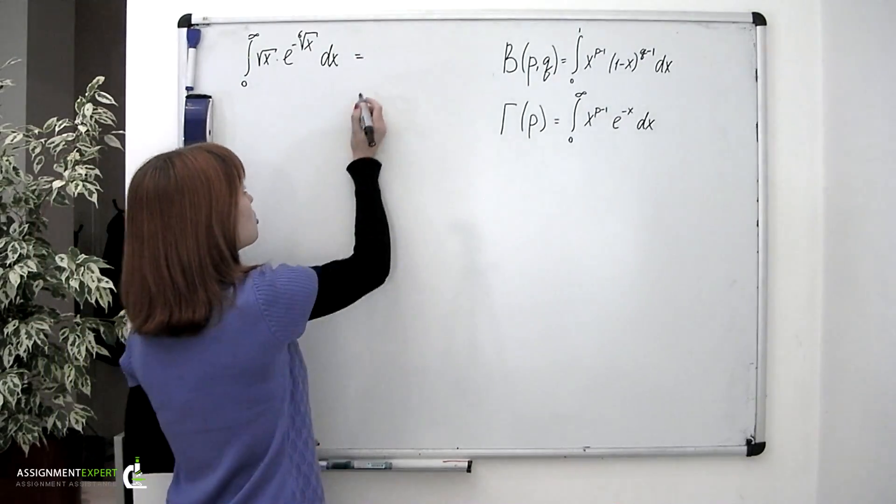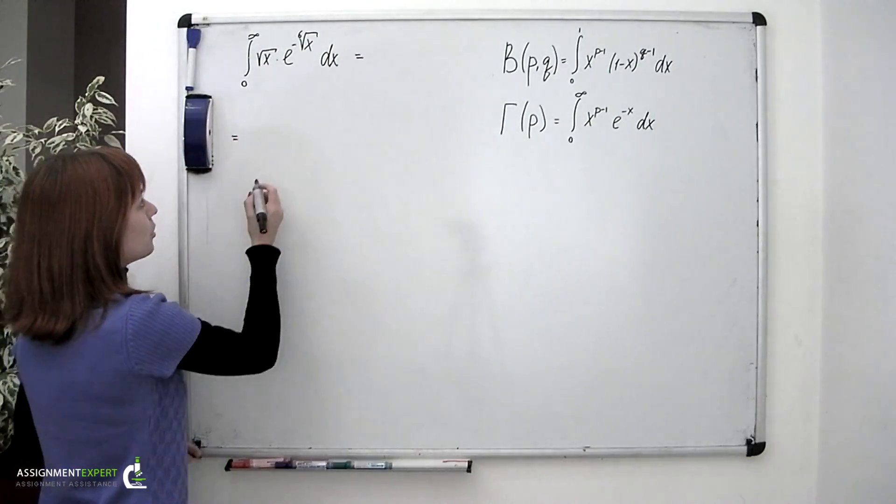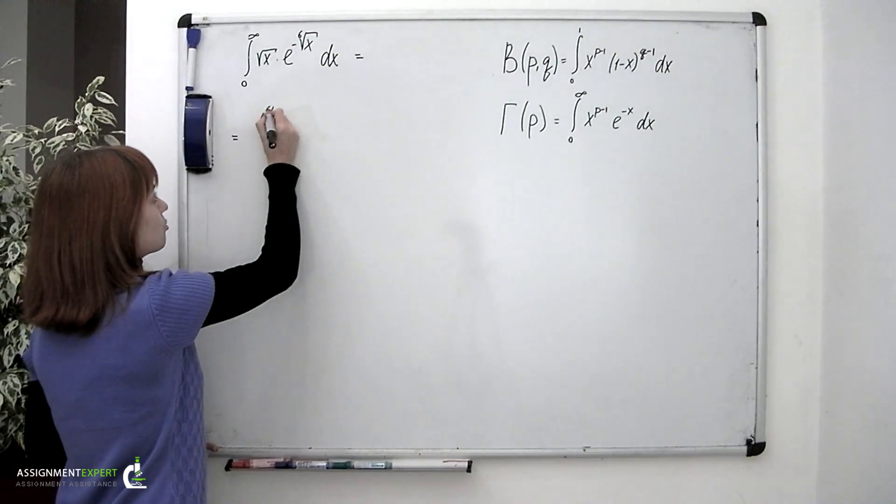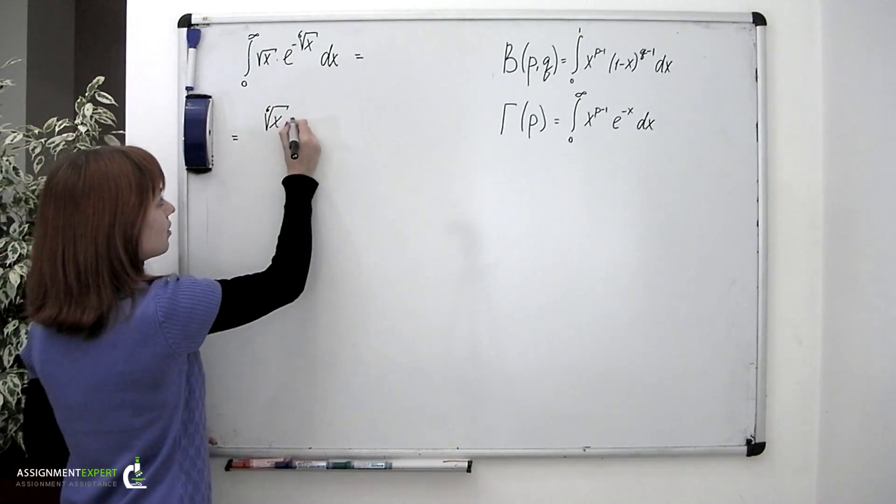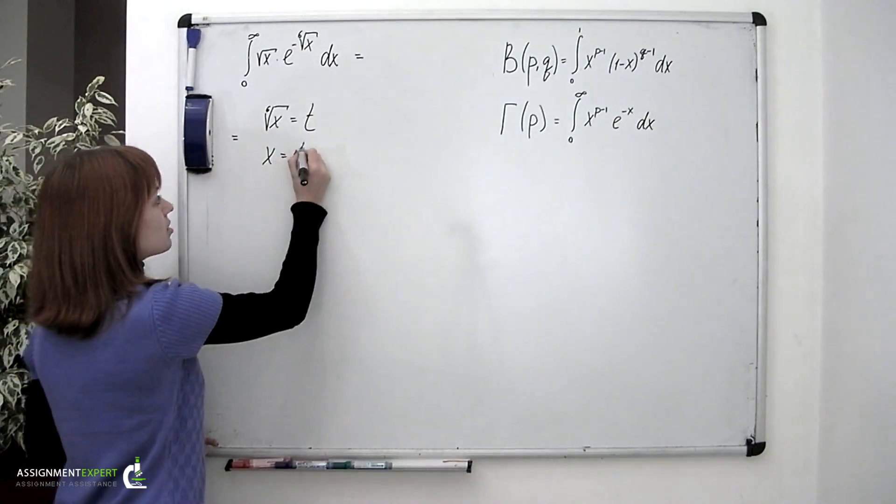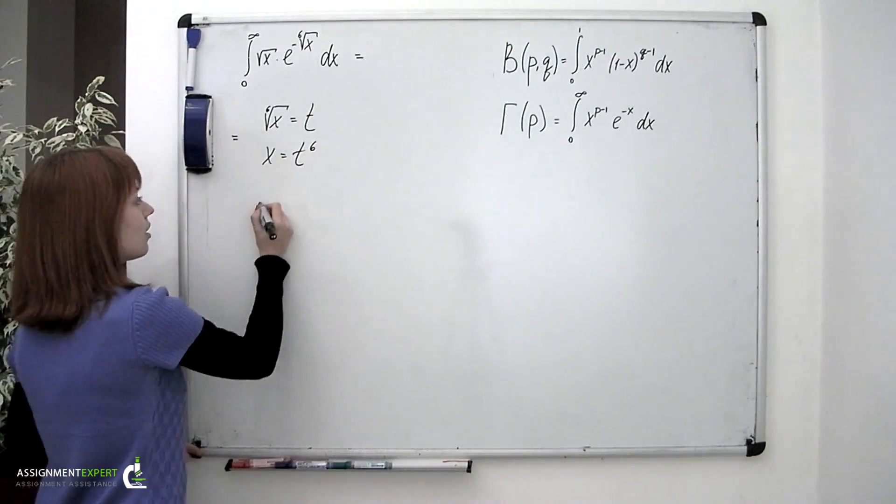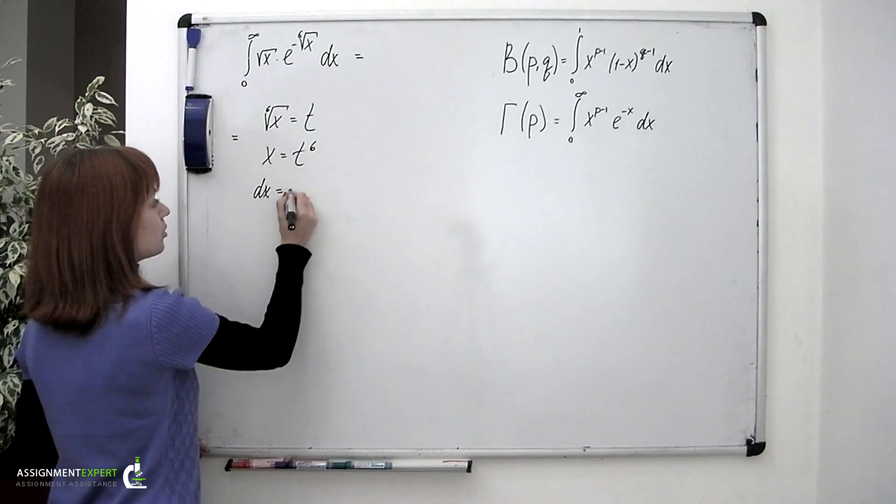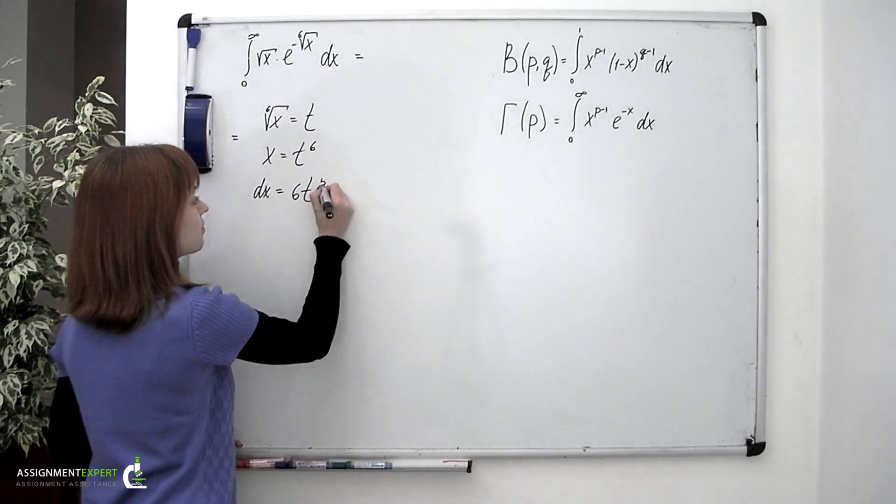And I suggest a substitution. We can denote 6 root of x as t. And so we'll have x equals t to the 6 and dx equals 6t to the 5th dt.